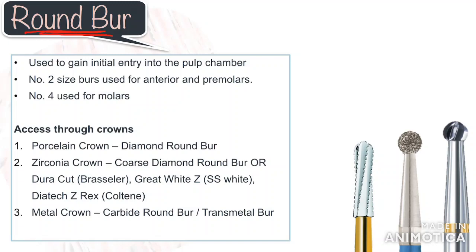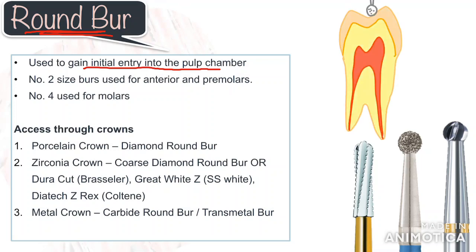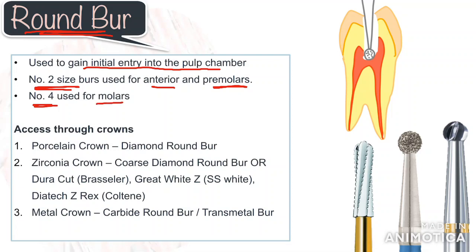The first instrument we will discuss is the round burr, which is the most commonly used initial burr for access opening. It is used to penetrate into the pulp chamber. Once the drop into the pulp chamber is obtained, the round burr is moved inside to outside in a brushing motion to remove the dentinal overhangs. The size of the round burr generally varies for anterior teeth and molars — a number 2 size is used for anterior and premolars, whereas a number 4 size is used for molars.